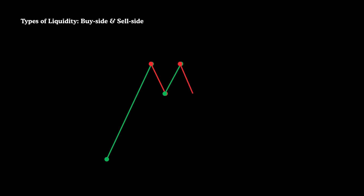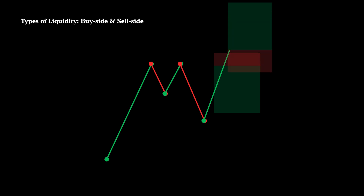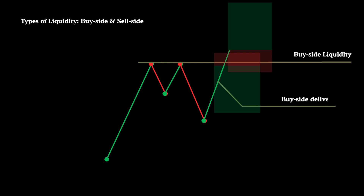Liquidity positioned above a high or cluster of highs is considered buy-side liquidity. As price nears this area, bearish traders may initiate short positions or safeguard their earlier shorts. Simultaneously, breakout traders tend to go long if the level is breached. The sharp movement targeting this liquidity is known as buy-side delivery — essentially driving price higher to tap into liquidity resting above relative equal highs. Algorithmic price delivery captures this liquidity by luring traders on both ends, after which smart money typically initiates short positions.